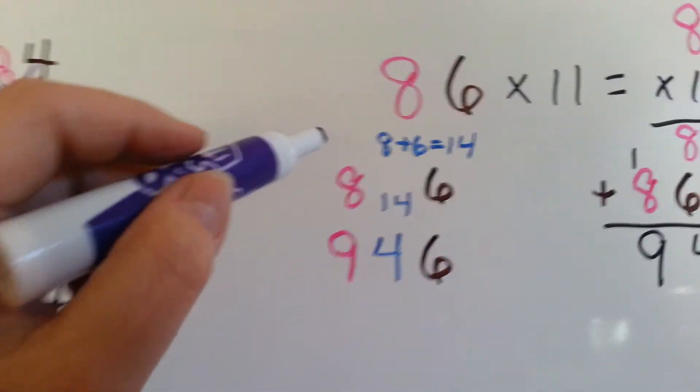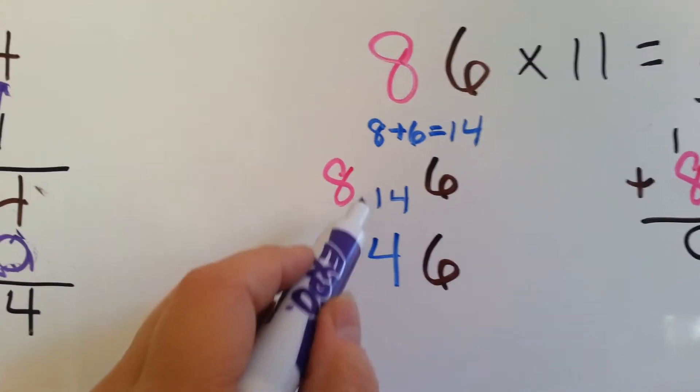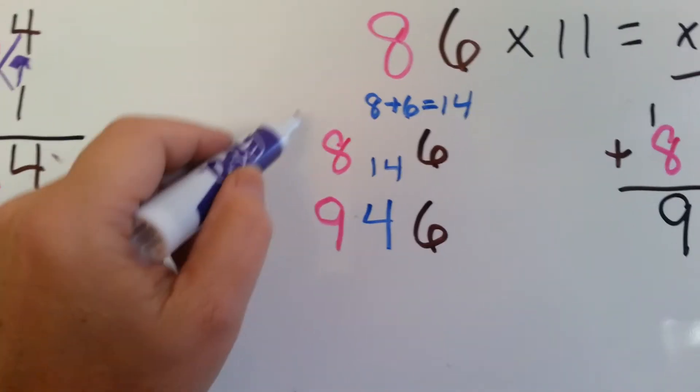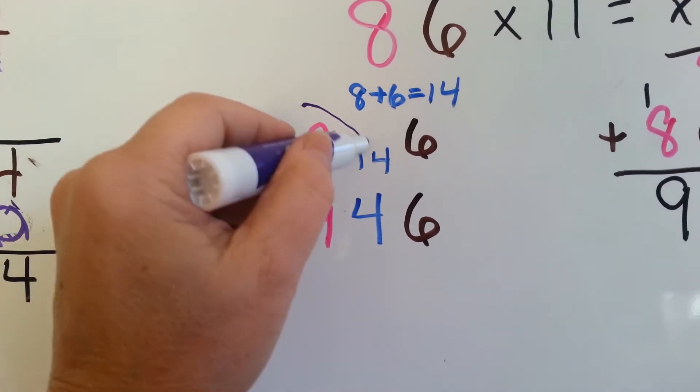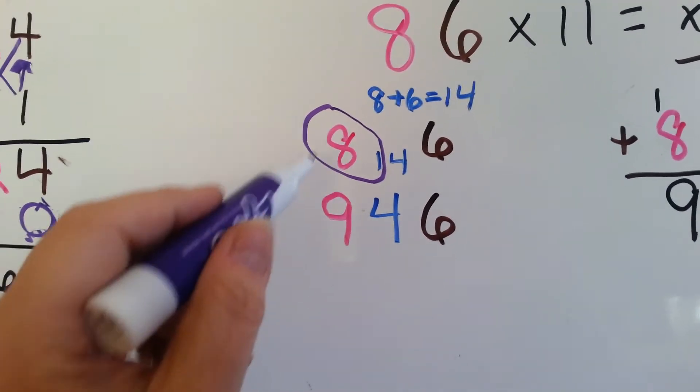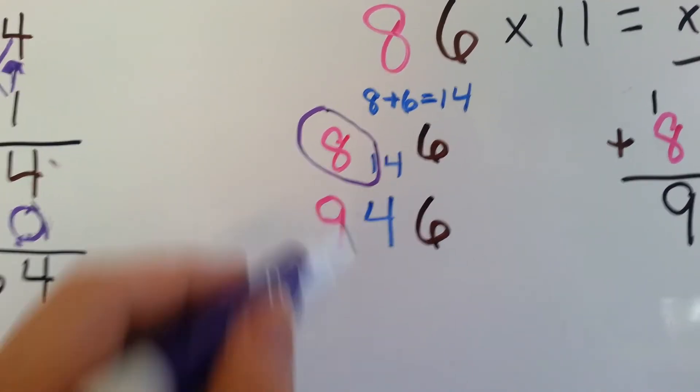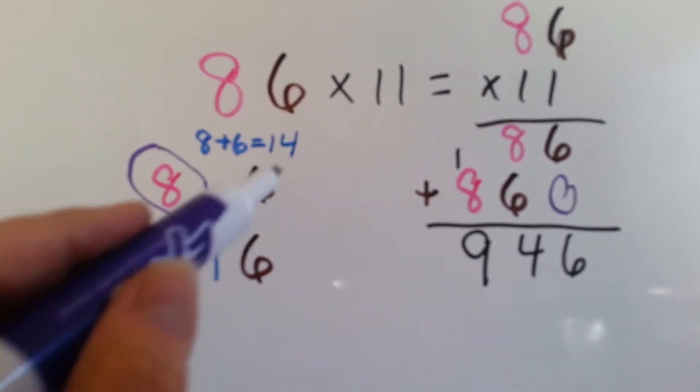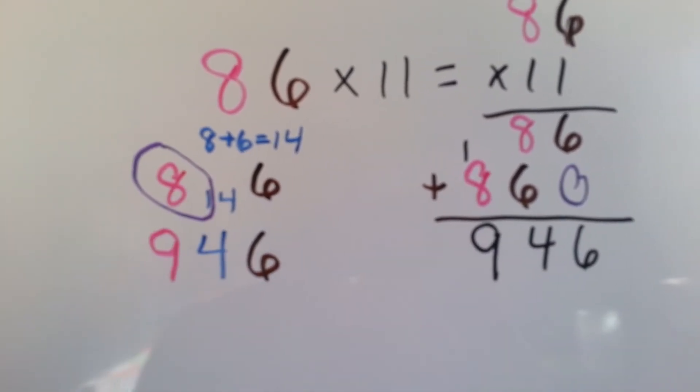Let's try it the tricky way. Now we've got 2 numbers in the middle. 8 plus 6 is 14. So what we're going to do is, we're going to group that 1 with that 8, and put the 4 down. So the 8 and the 1 becomes a 9. See? Do you see how I did that?